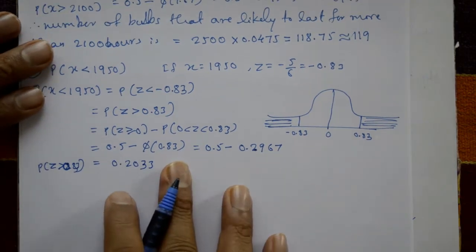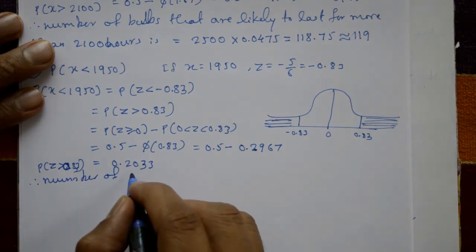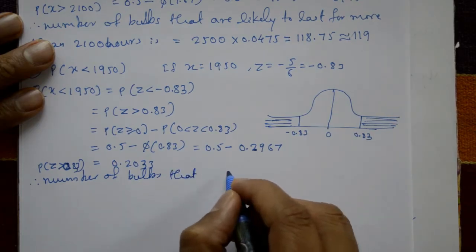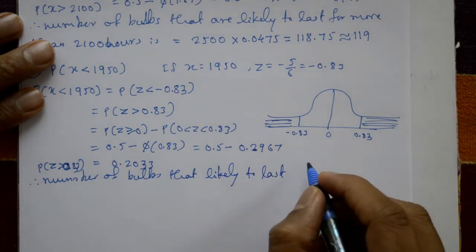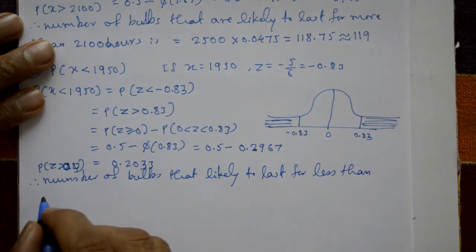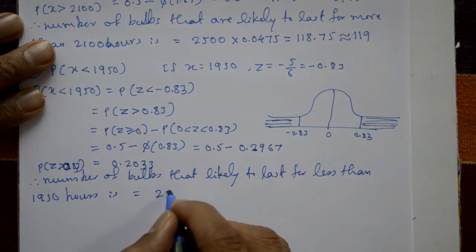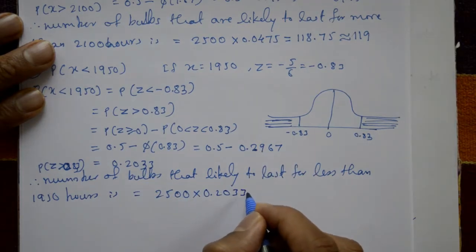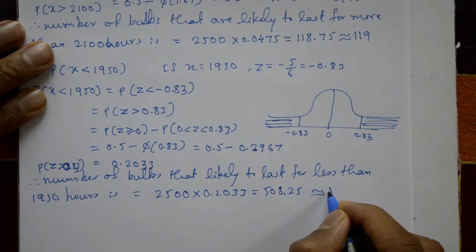We calculate out of 2500 bulbs. Therefore, number of bulbs likely to last less than 1950 hours = 2500 × 0.2033 = 508.25, approximately 508 bulbs.